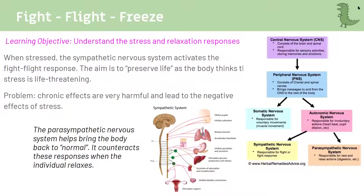The parasympathetic system is important to know because it counterbalances the sympathetic. If the sympathetic dilates your pupils, the parasympathetic contracts them. If the sympathetic stops digestion, the parasympathetic starts digestion — it just counterbalances everything.